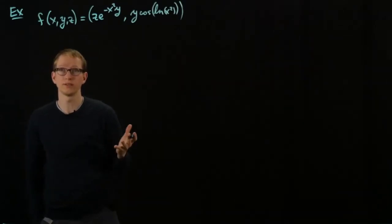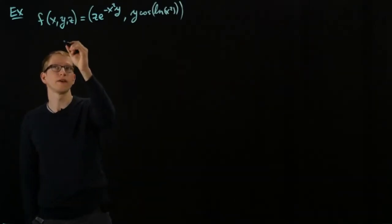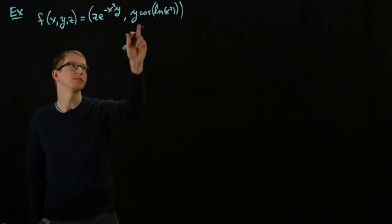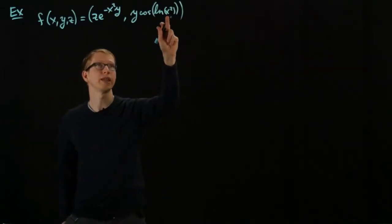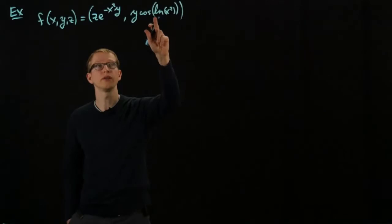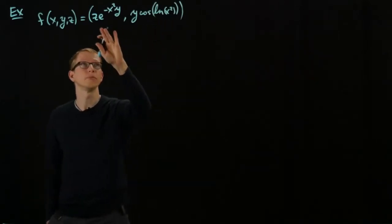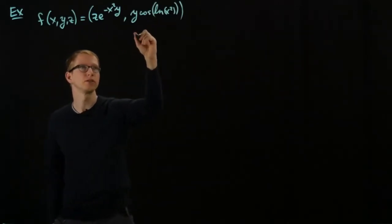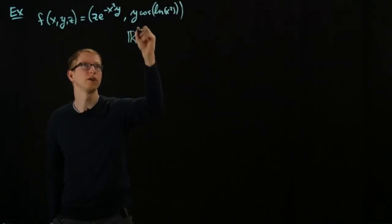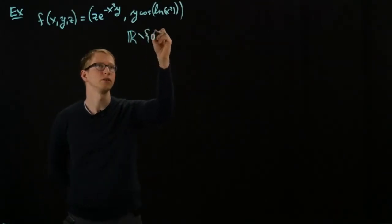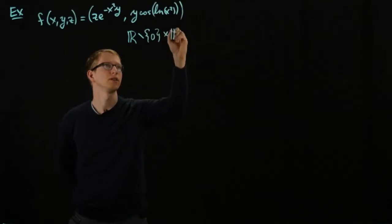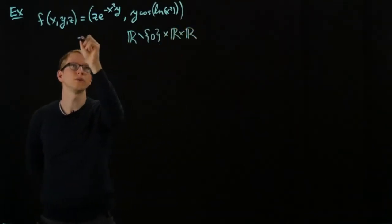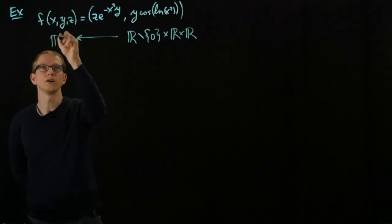First of all, what is the domain of this function? Since the logarithm can't ever take 0 as input, we know that 0 can't be included. But otherwise, everywhere else, the function is defined. So this gives us a function from R minus the origin, cross R, cross R, to R2.